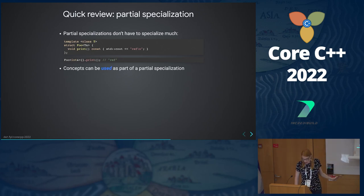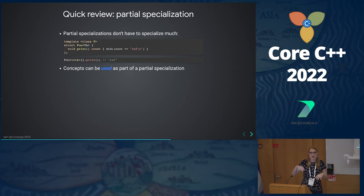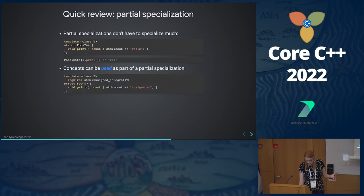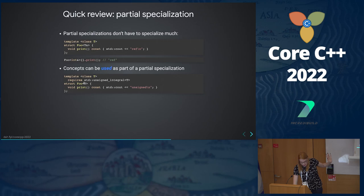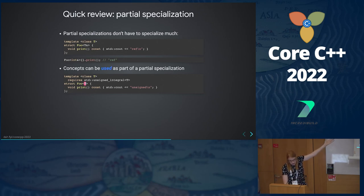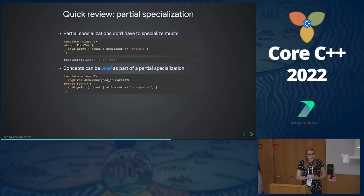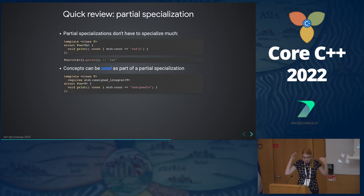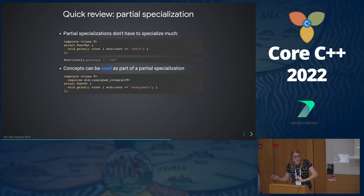This doesn't look super specialized — the actual pattern you're matching is T, it looks unspecialized, but this is a constrained T. We've constrained it to only be things that match the unsigned_integral concept, which is in the <concepts> header in C++20. If the substitution fails, it can't use this specialization; if it can do the substitution, it will use this definition of the type. I'm trying to be precise about my language here, but C++ has words that are very similar with important differences. If you're on YouTube, go down into the comments and people will be correcting me there — which is awesome, because you can get the right information in our community.